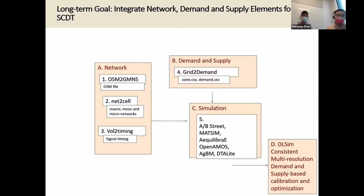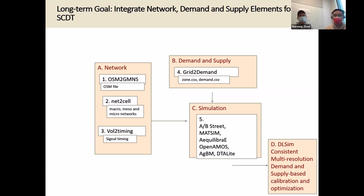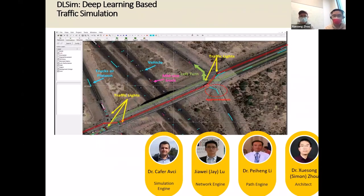Our long-term goal is to integrate demand-supply elements all together. In summary: A is the network, we build the conversion from OSM to GMNS; B is the demand-supply data specification; C is the simulation; and D is DL-SYN to maintain the consistent multi-resolution demand-supply-based representation and optimization. I want to play a quick video on the simulation tool as part of our development process, followed by Jave's introduction on the key network specification.